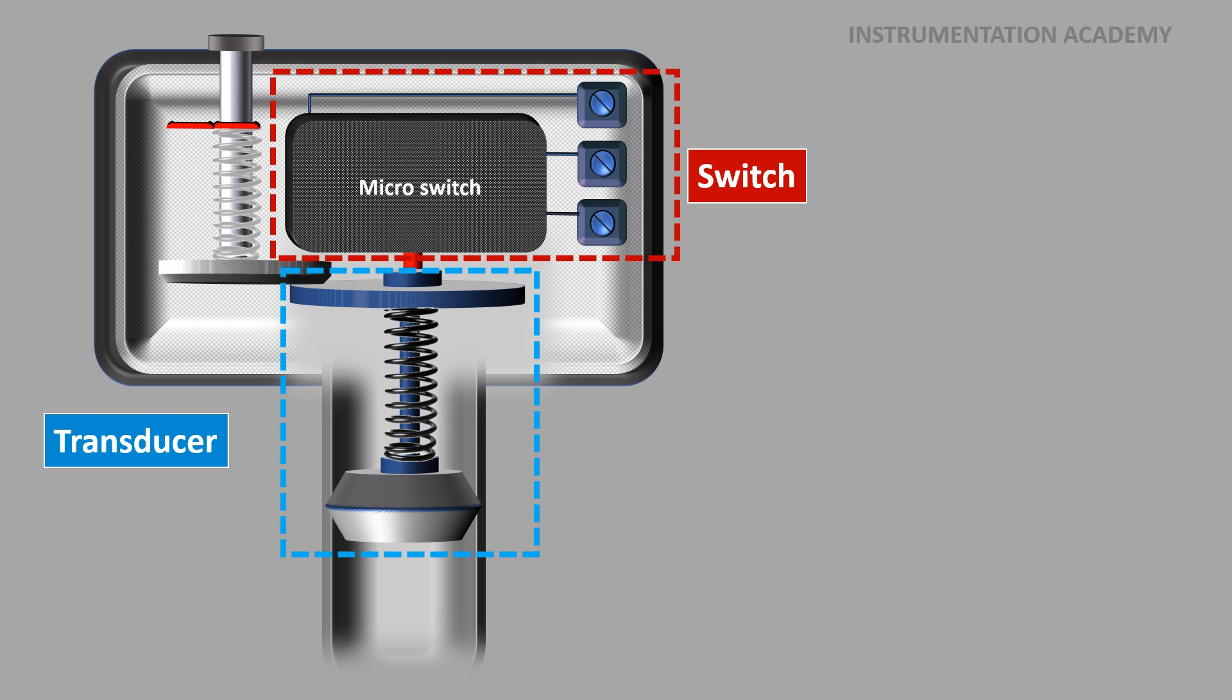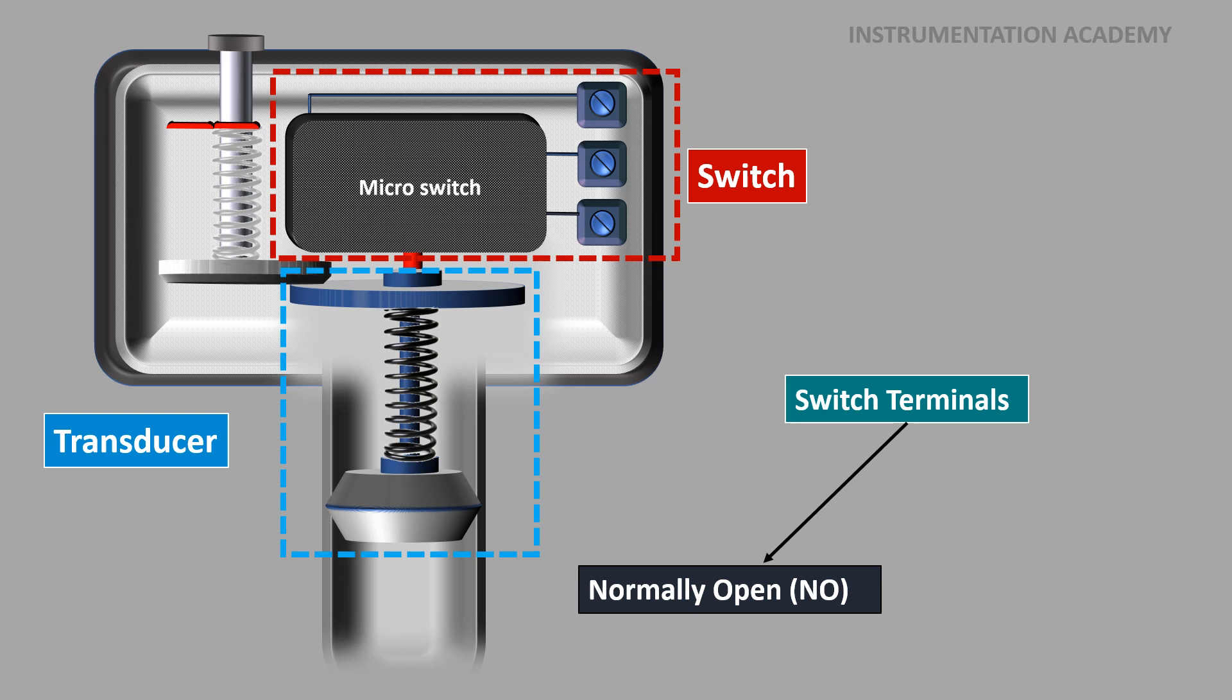Some switches have the switch terminals opened when no pressure is connected, which is called normally open switch (NO). When enough pressure is applied, the switch closes. On the other hand, some switches have the switch terminals closed when no pressure is connected, which is called normally closed switch (NC), and when enough pressure is applied the switch opens.